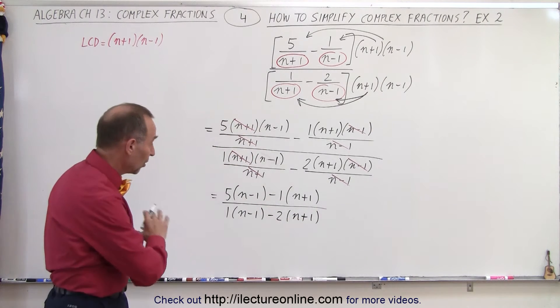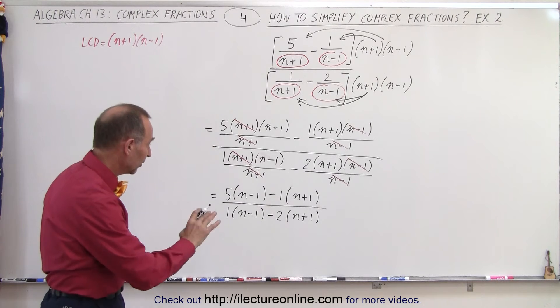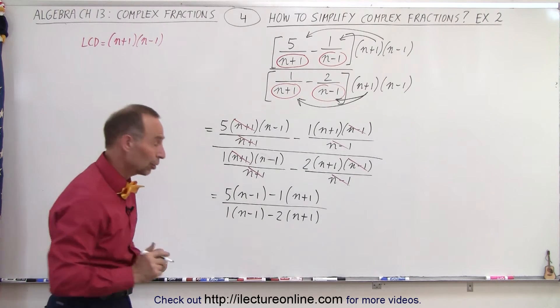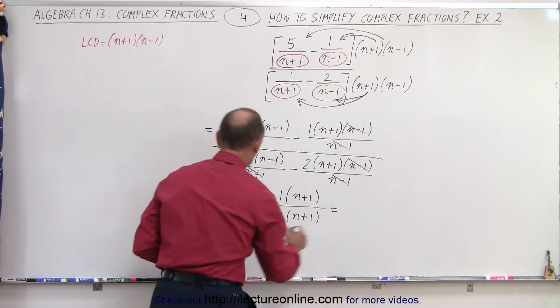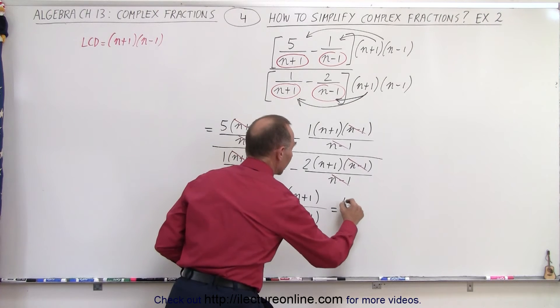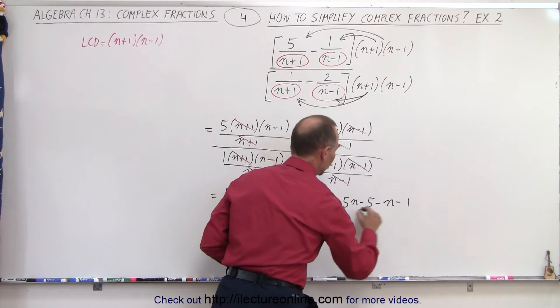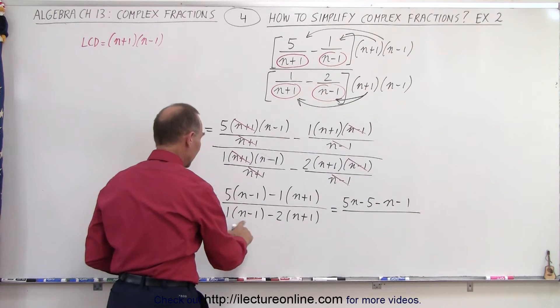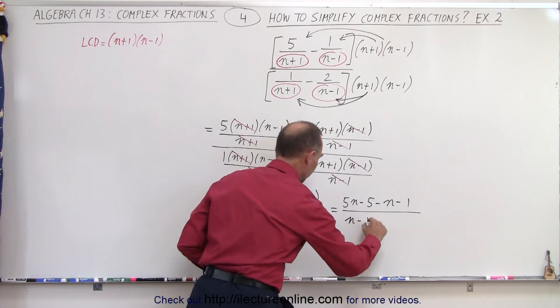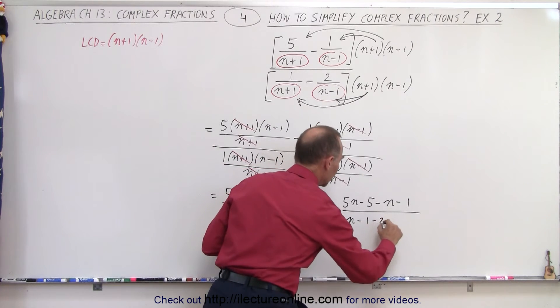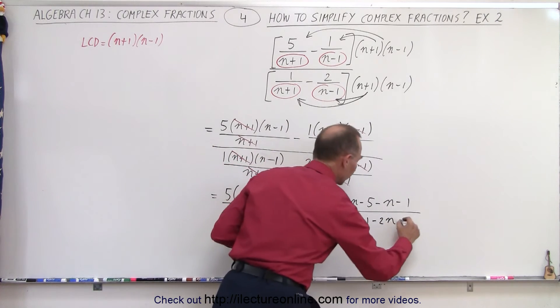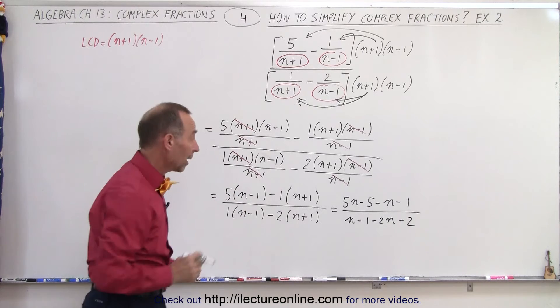And now all we have to do is multiply everything in the numerator and denominator and collect common terms. So this becomes equal to 5n minus 5 minus n minus 1 all divided by n minus 1 and minus 2n and minus 2.